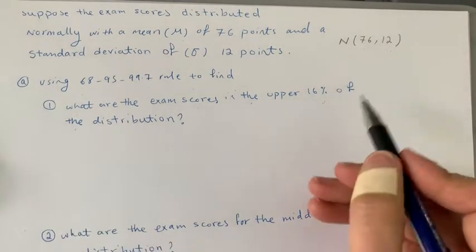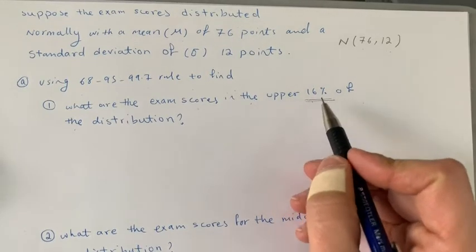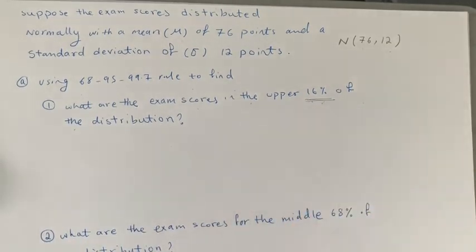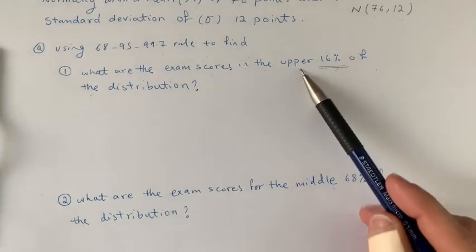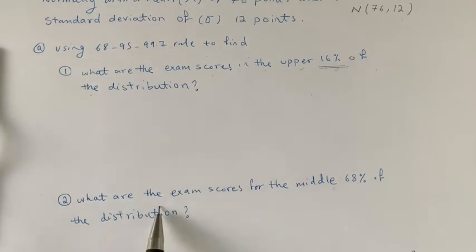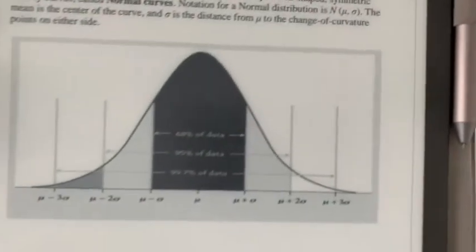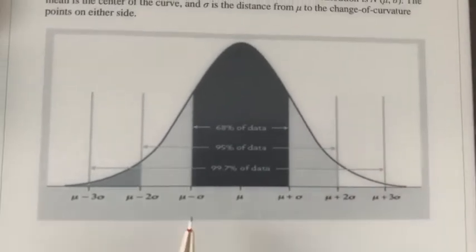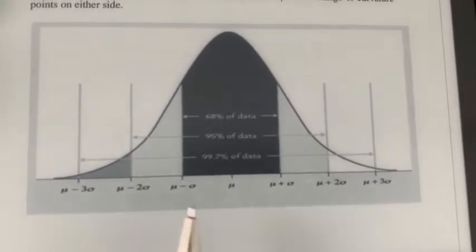The first question asks: what are the exam scores in the upper 16% of the distribution? That may be difficult to imagine at first, so let's start with the second part, which gives us a hint. It says: what are the exam scores for the middle 68% of the distribution?